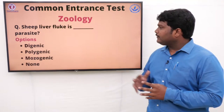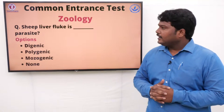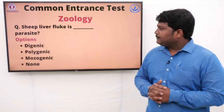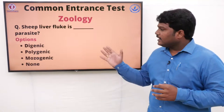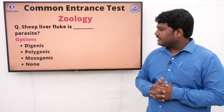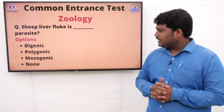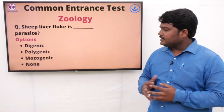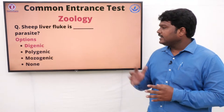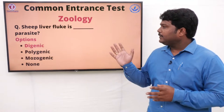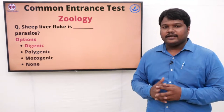Question 33: Sheep liver fluke is a dash parasite. Options: A) Digenic, B) Polygenic, C) Monogenic, D) None. The right answer is digenic. Sheep liver fluke is a digenic parasite.